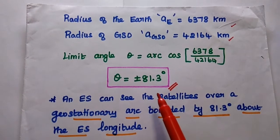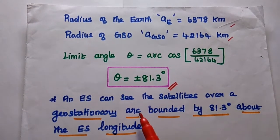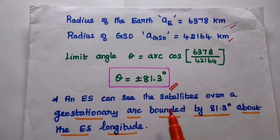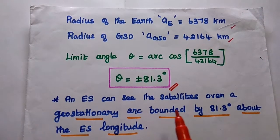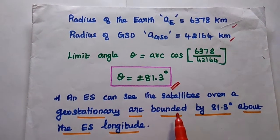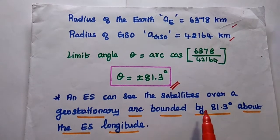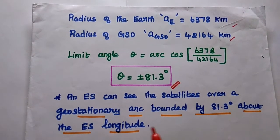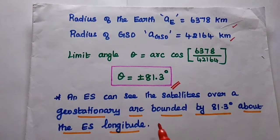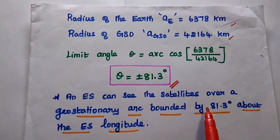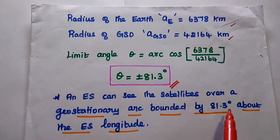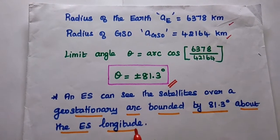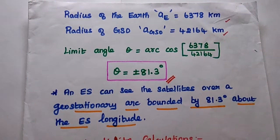From this calculation, we get theta equal to plus or minus 81.3 degrees. This means the earth station can see the satellites over a geostationary arc bounded by 81.3 degrees about the longitude. Based on this longitude bound of 81.3 degrees, the earth station can see the satellites within that range.